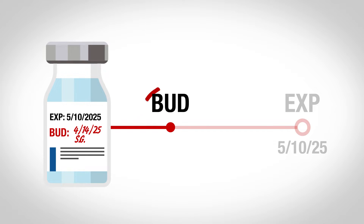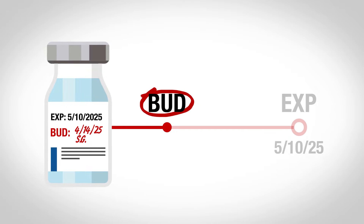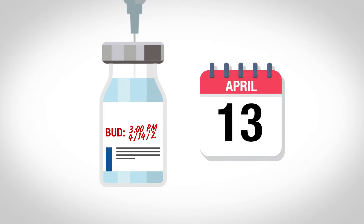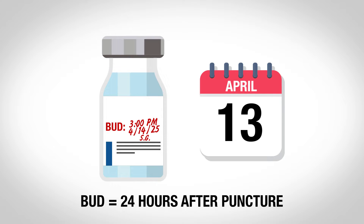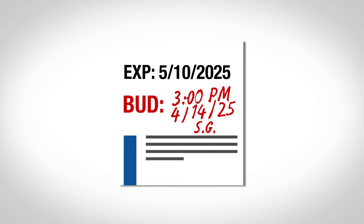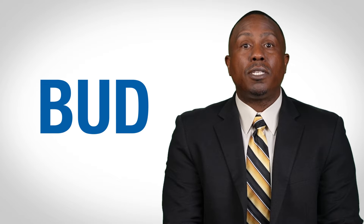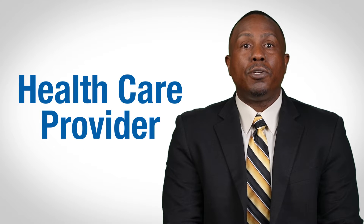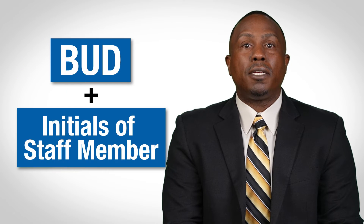Always use the earlier date or time when reviewing the two dates. For example, once a vial has been punctured, its beyond-use date may be 24 hours after puncture, even though its expiration date may be a month away. Unlike the expiration date which is determined by the manufacturer, the BUD is determined by the healthcare provider using guidance included in the vaccine's package insert or fact sheet. After calculating the BUD, label the vial with the BUD and initials of the staff member making the calculation.